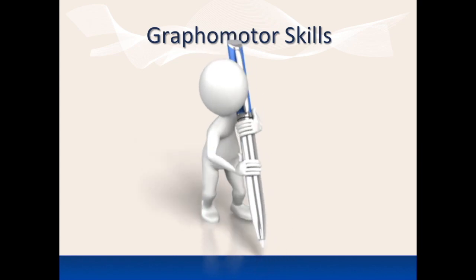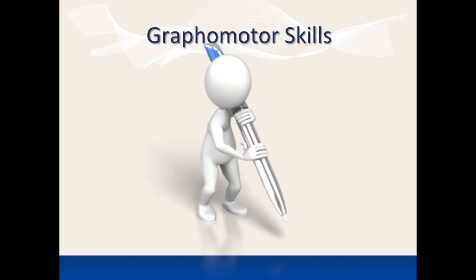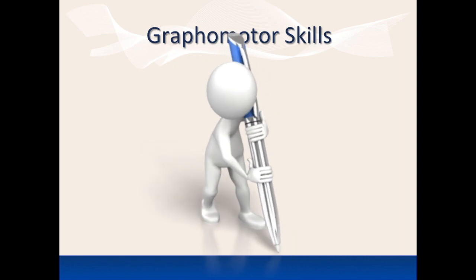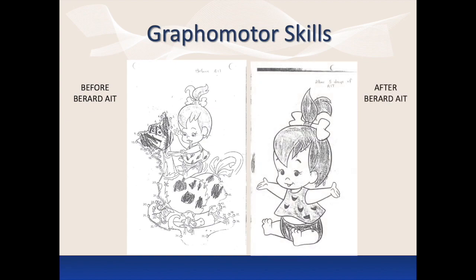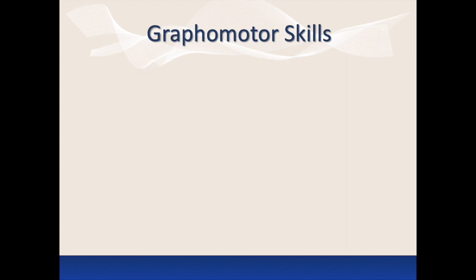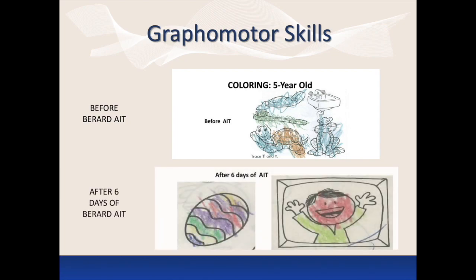Berard AIT can impact on the integration of abilities required for graphomotor skills to develop, and so we often see improvements in coloring, drawing, and writing. These examples show the changes which may begin during Berard AIT or during the months that follow. Before the Berard AIT program, this child had poor control and was not able to color within the lines. After completing only five days of Berard AIT, her mother was both shocked and delighted to see the improvements in control. This five-year-old quickly scribbled over the pictures without control and without thought to the colors used.